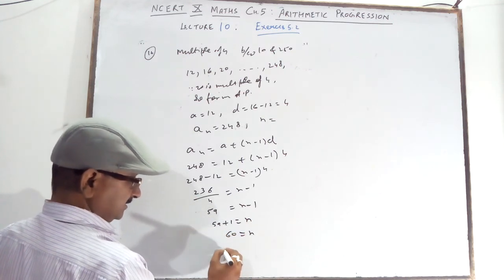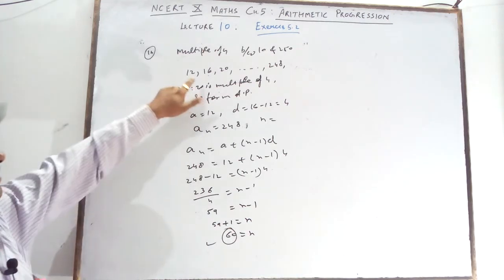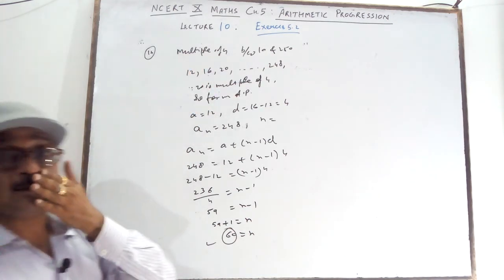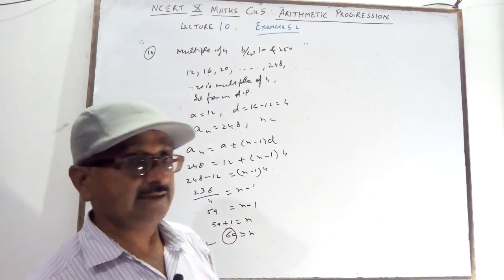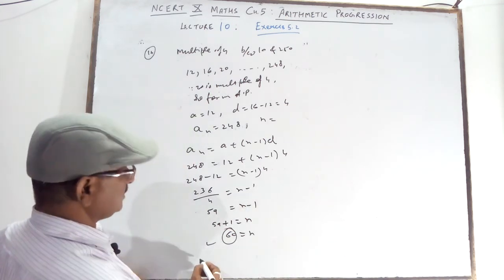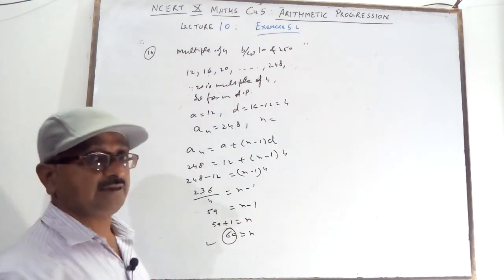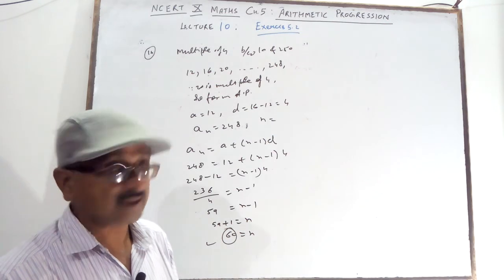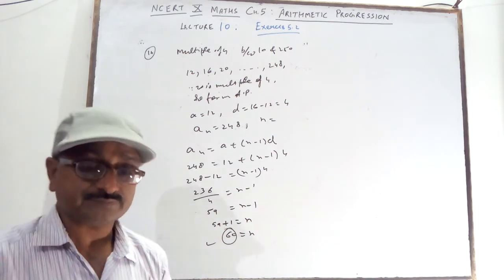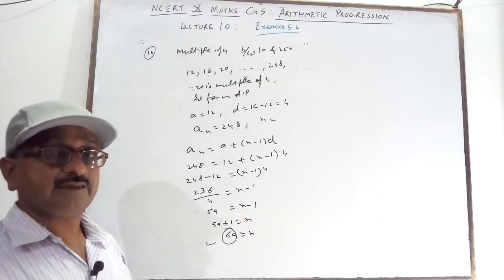So N equals 59 plus 1, which is 60. Therefore 60 multiples of 4 lie between 10 and 250. That is your answer.